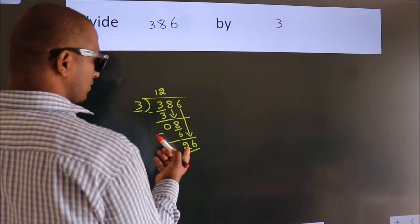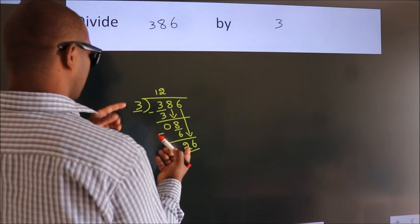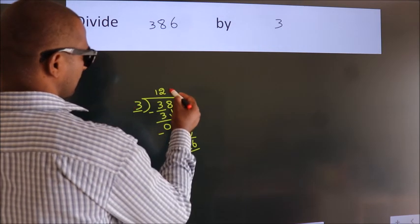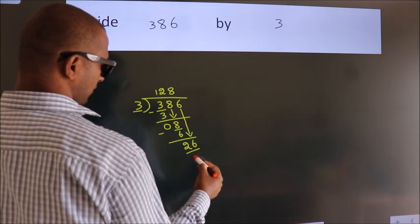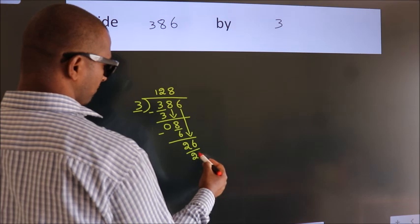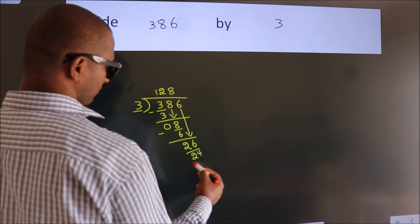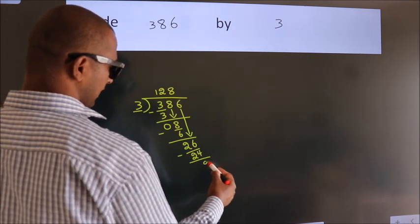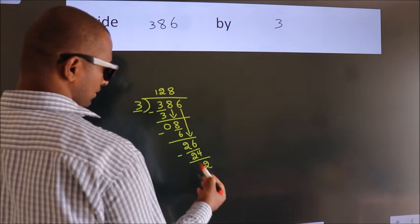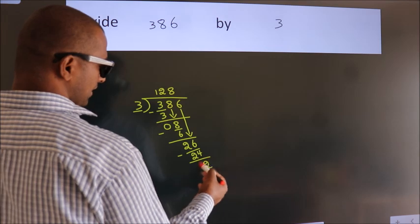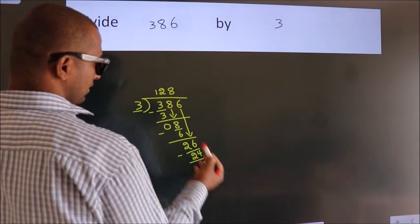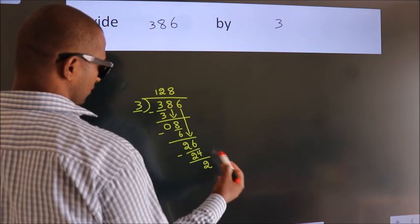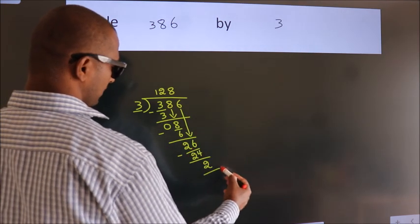A number close to 26 in the 3 table is 3 8's, 24. Now we subtract, we get 2. After this, no more numbers to bring down, so we stop here.